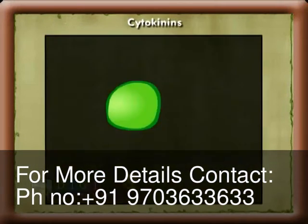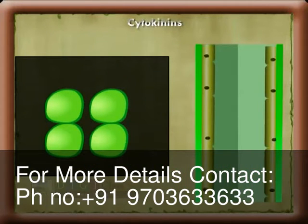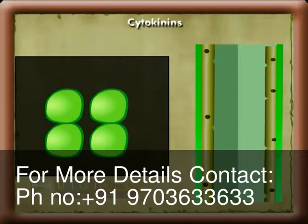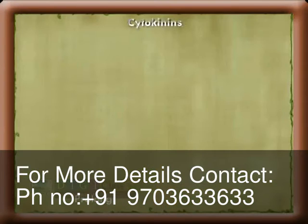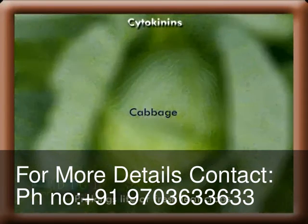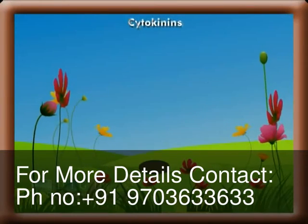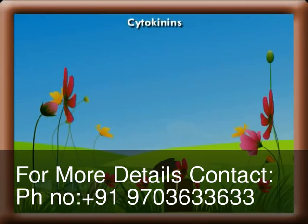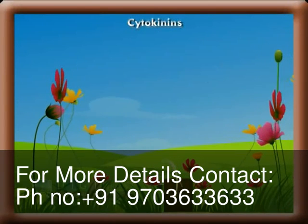Cytokinins are useful in stimulating cell division and cell elongation in the presence of auxins, delaying the process of ageing in leaves, and prolonging the life of fresh leaf crops like cabbage, spinach, coriander, etc. They are also useful in breaking the dormancy of seeds to germinate. Bye-bye.